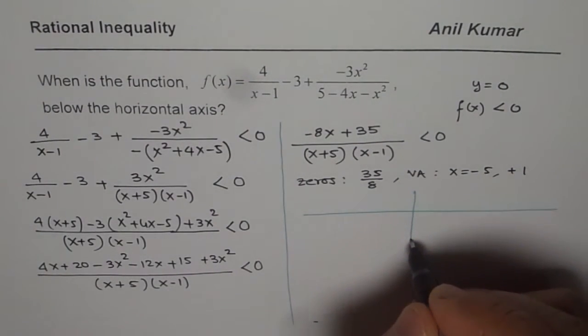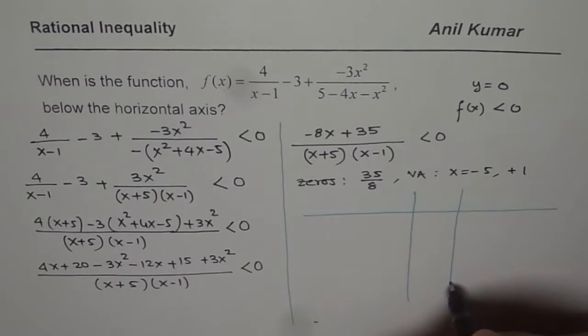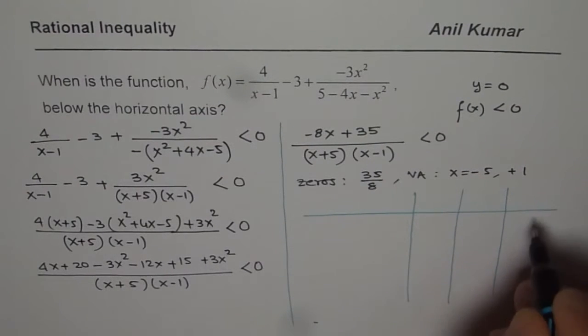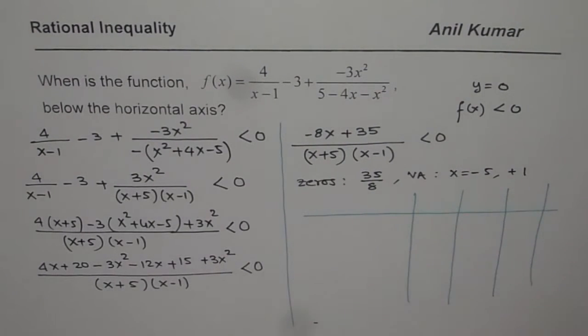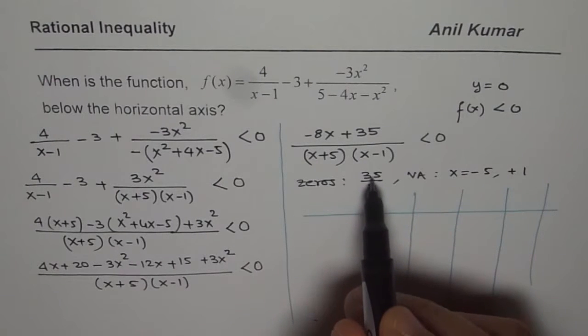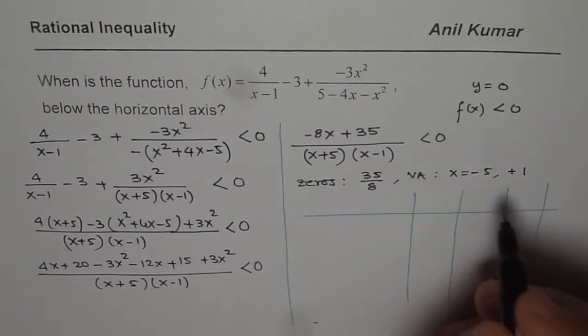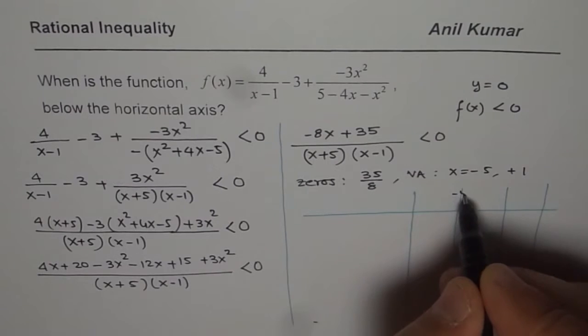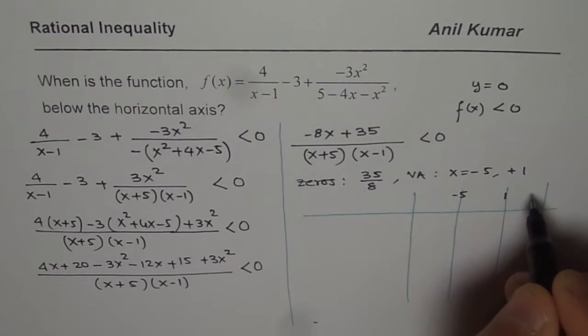For the given points, these zeros and vertical asymptotes divide our plane. We have 3 of them, they divide our plane into 4 different parts. Now 35 over 8 is kind of 4 point something. So this is minus 5. So let us say this is minus 5. Then we have 1 and then we have 35 over 8.